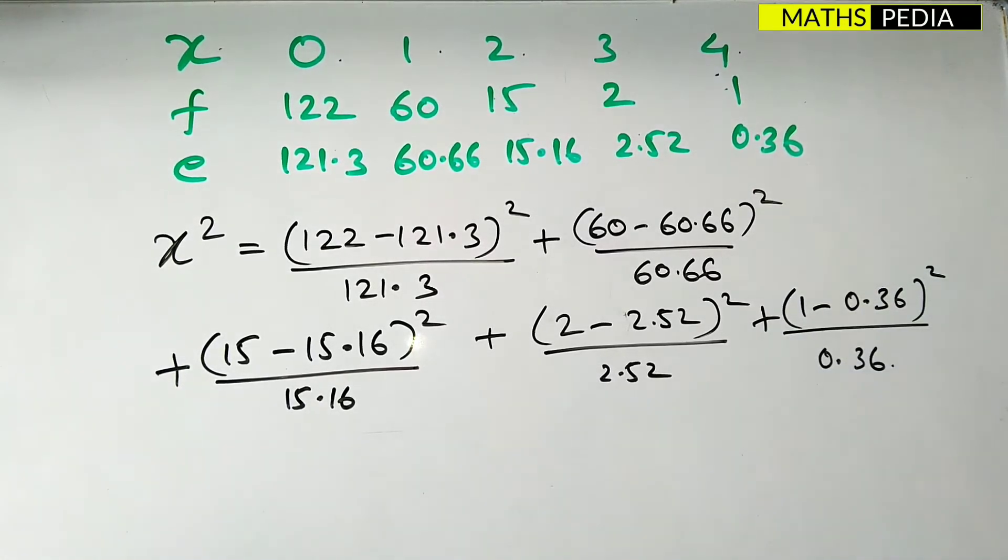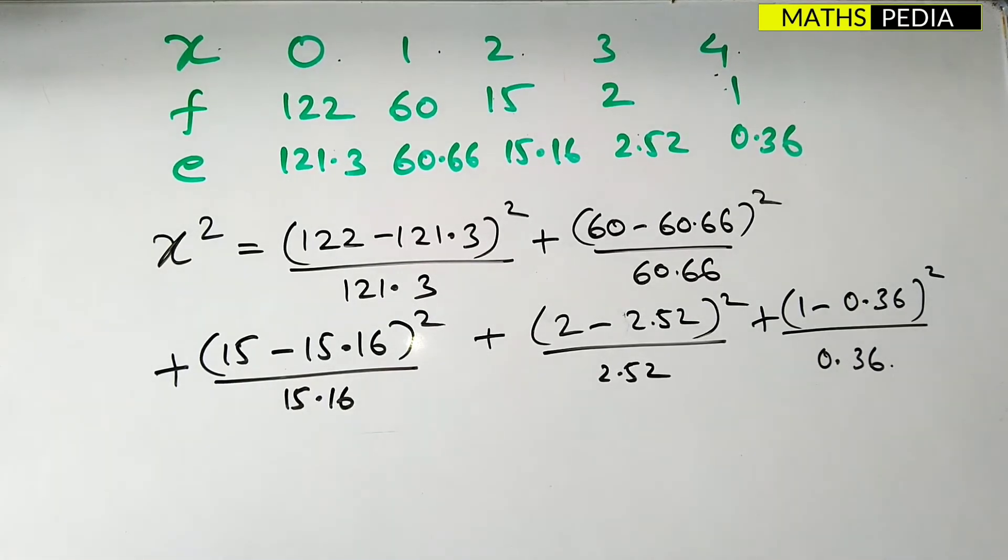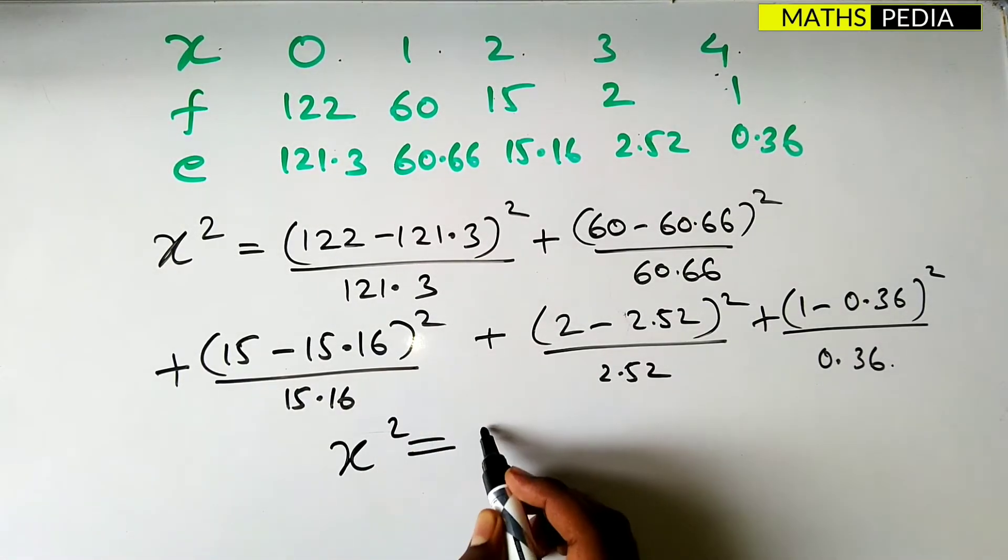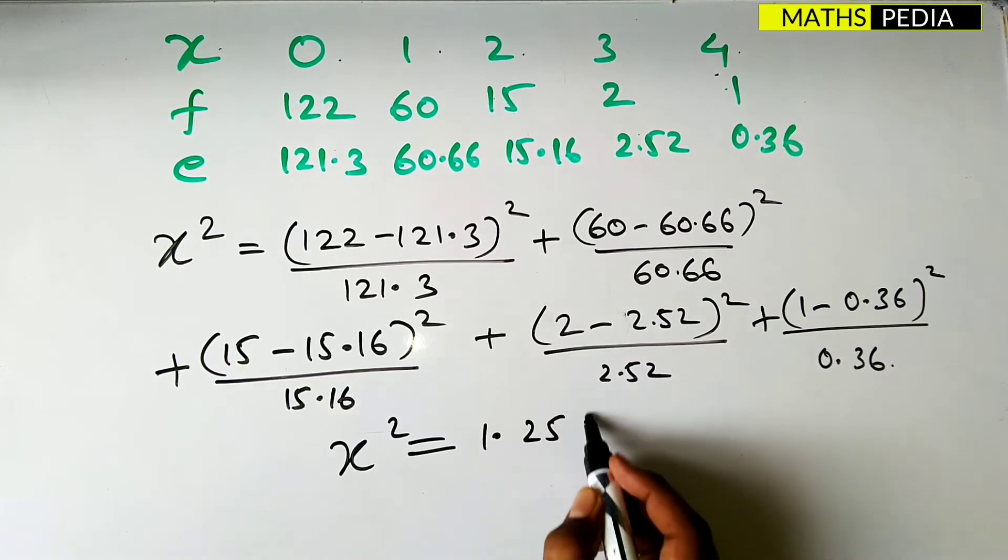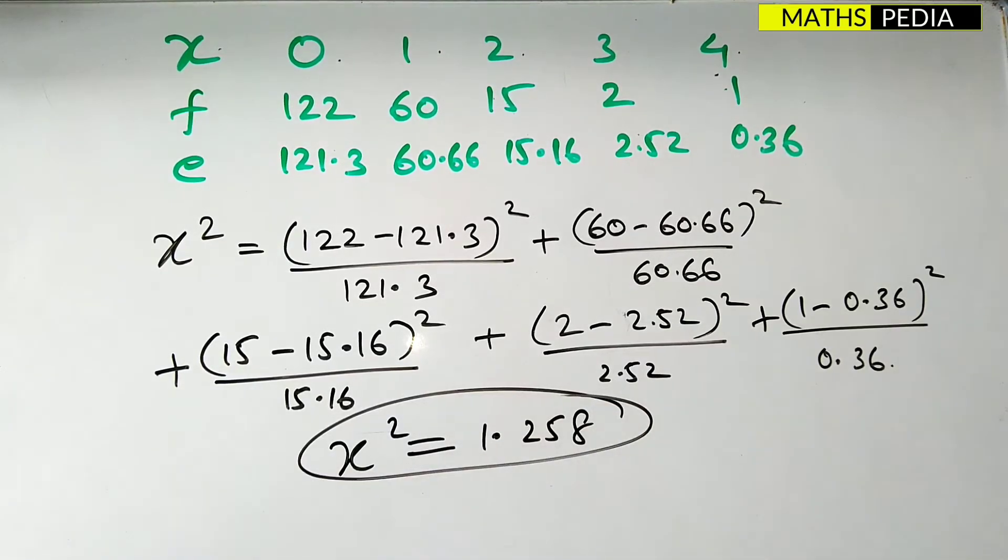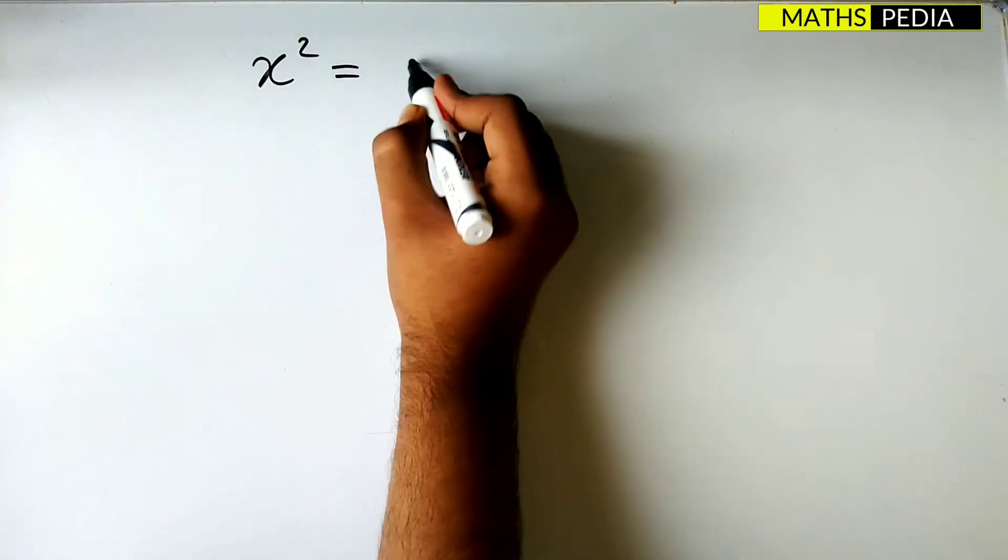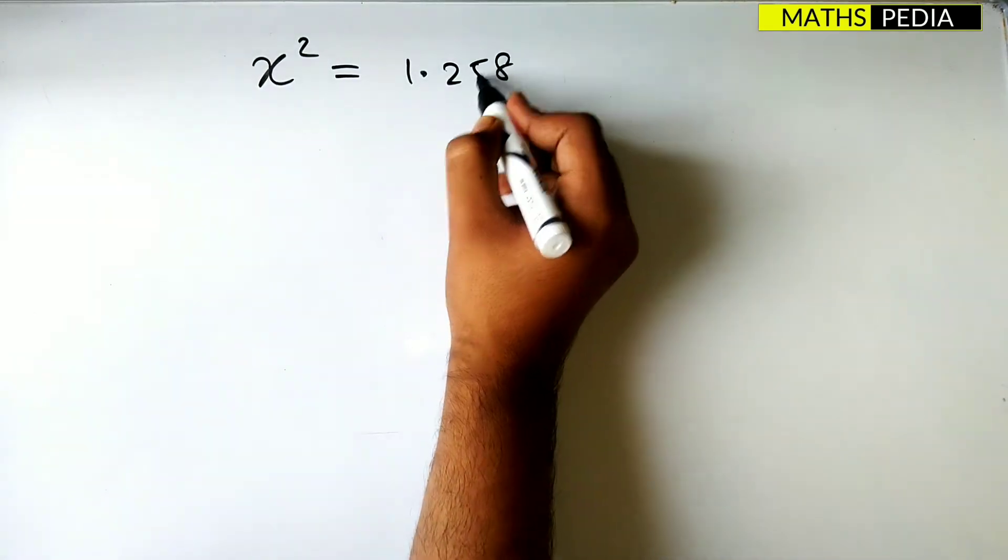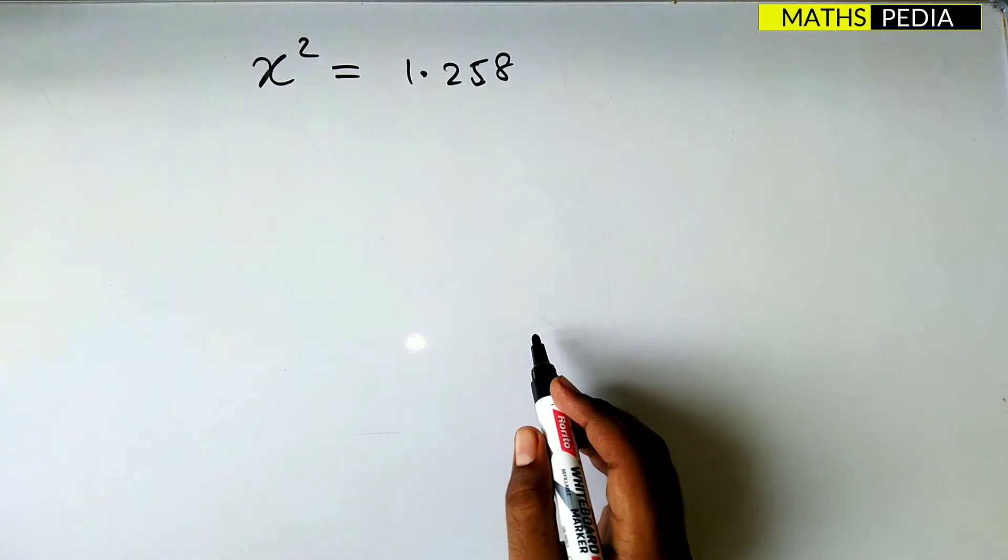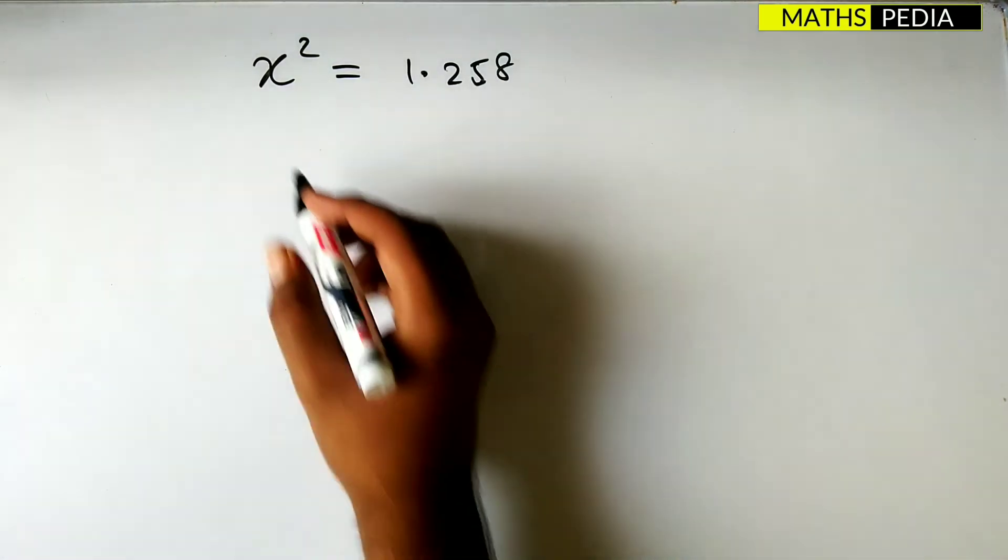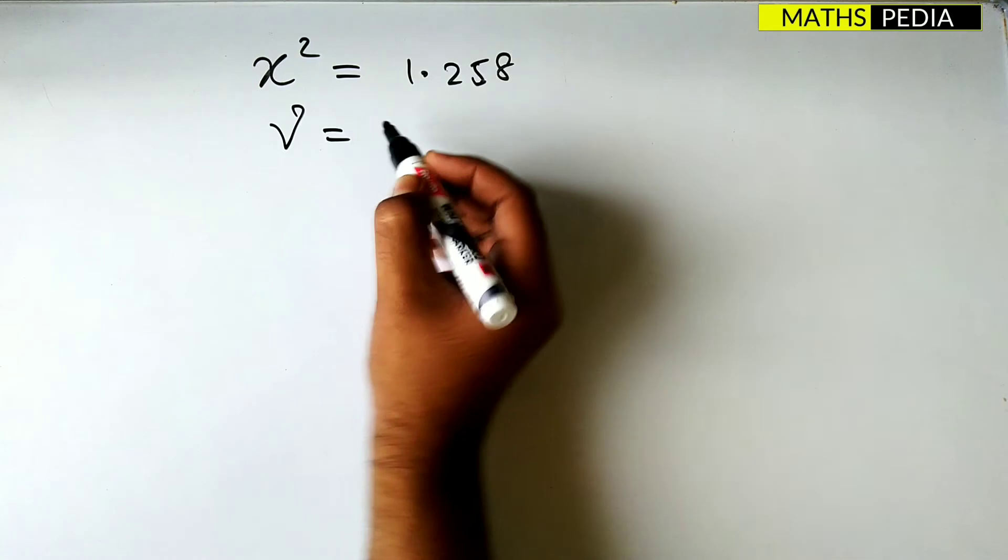This is all we have to do. We have to calculate all these values and finally you will get the chi-square value as 1.258. This is the chi-square value. So we have chi-square value as 1.258. Now we need to test the hypothesis for that. We have to find the critical value from the table. So it depends on the degree of freedom.